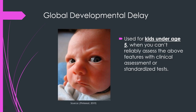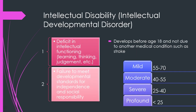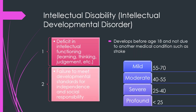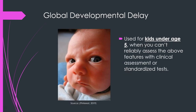Global developmental delay is used for kids under age 5 when you can't reliably assess intellectual disability features with clinical assessment or standardized tests. So if a young child isn't achieving certain milestones, you might say they have a global developmental delay until further testing can be done as they get a bit older.